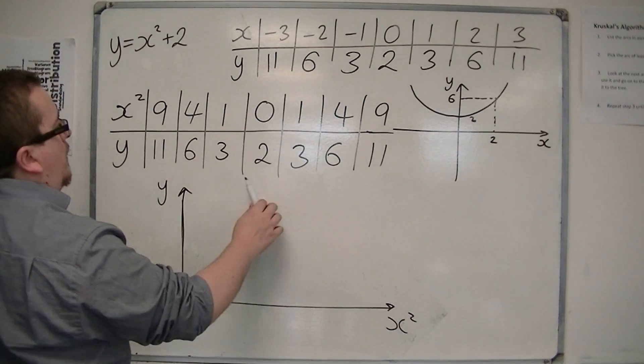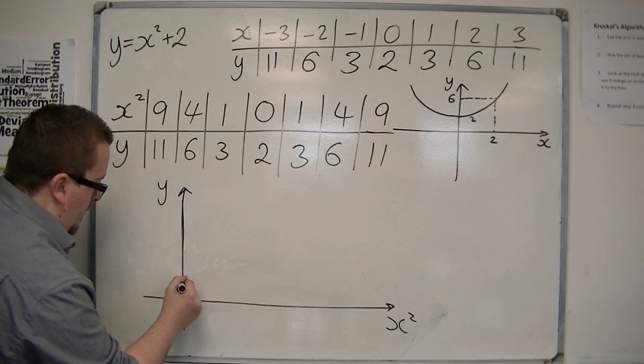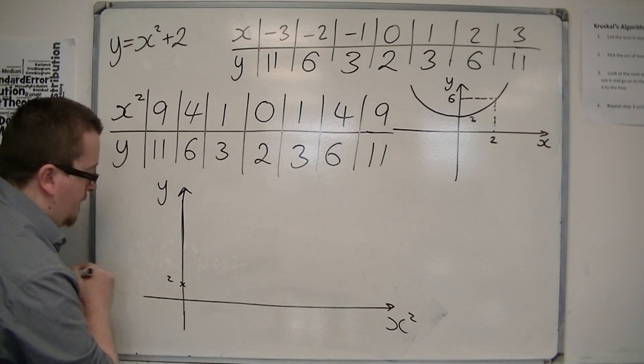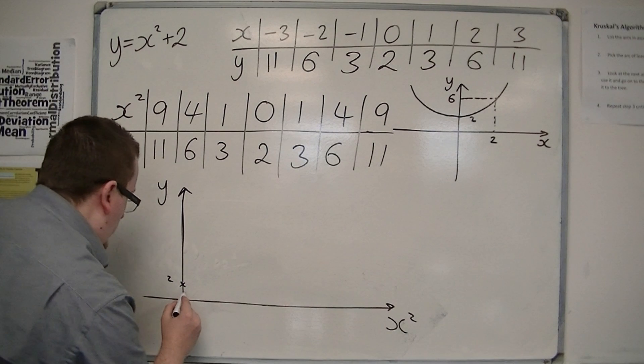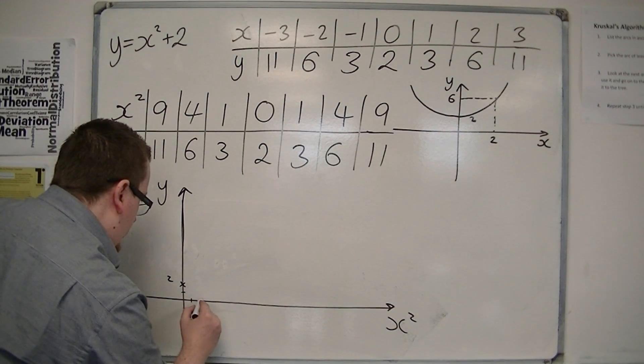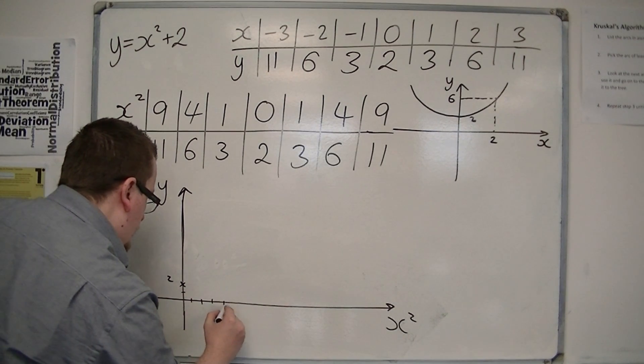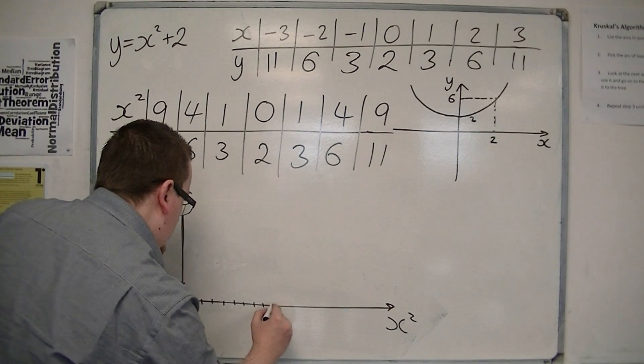So I'd have the point 0, 2, for example, so 0, 2 there. I would have, so let's try and divvy this up a bit better. 3, 4, 5, 6, 7, 8, 9, 10.